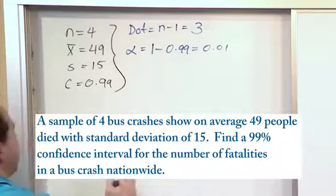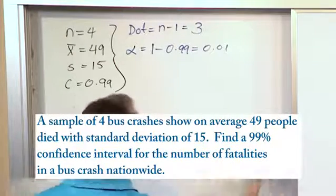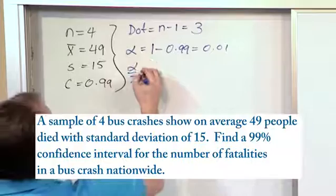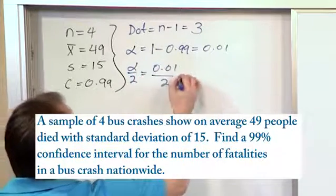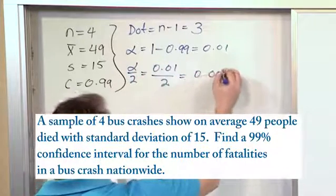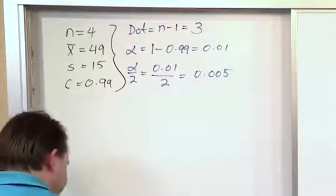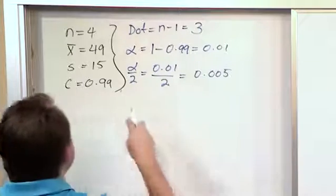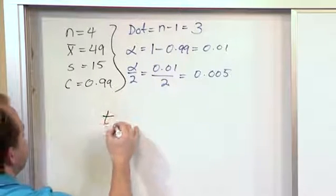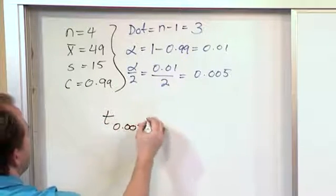And of course, we need only half of that because our chart is set up to give us the area to the right. So alpha over 2 is 0.01 over 2, which is 0.005. And ultimately what we're then trying to find is t sub alpha over 2. So we're trying to find t sub 0.005. That's what we really need.